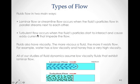There's also turbulent flow, and turbulent flow occurs when a fluid's particles start to interact and cause eddy currents that impede the flow. The currents start moving all over the place and create these little eddy currents that spin around in a circular fashion. That impedes the flow of the fluid considerably, so turbulent flow is very resistive. It usually happens when you try to force fluid to flow faster than it really wants to flow.